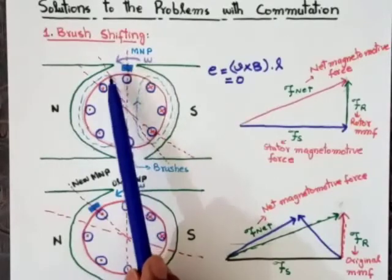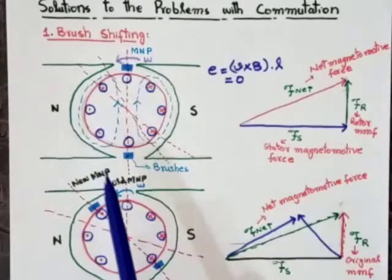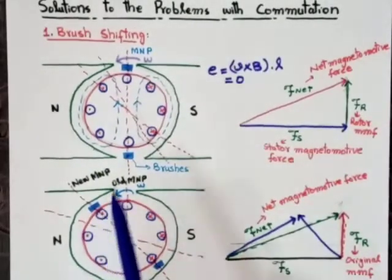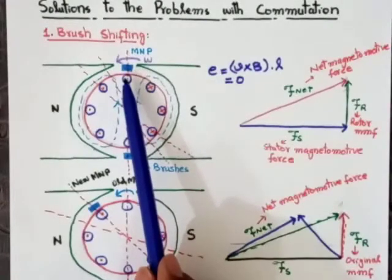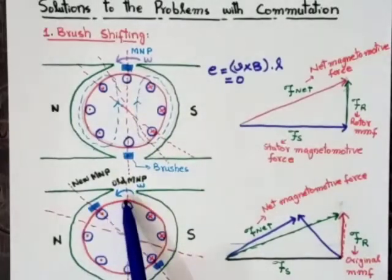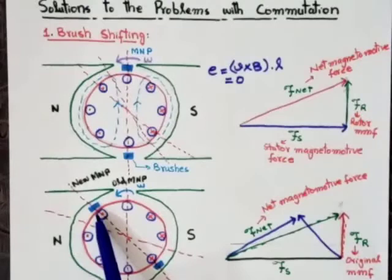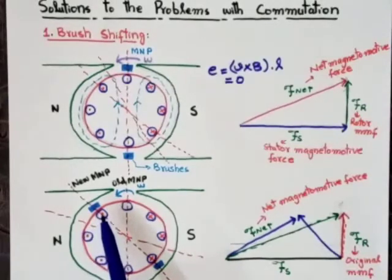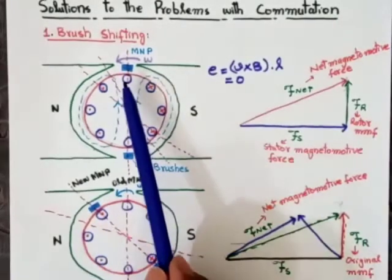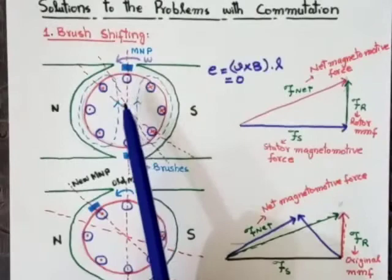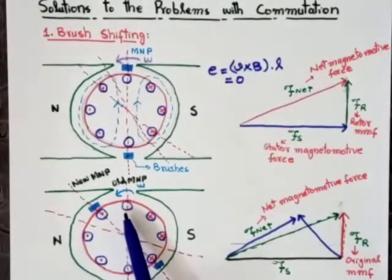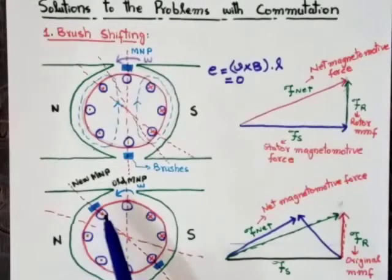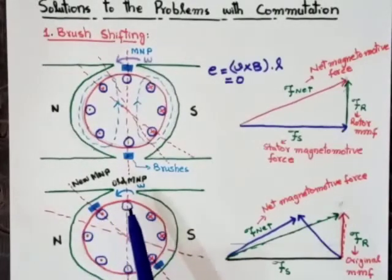When we connect the load, the magnetic neutral plane shifts in the direction of rotation. There is no mechanism inside the machine to automatically shift the brushes with the magnetic neutral plane — the brushes are fixed. There is no automatic phenomenon inside the machine to shift the brushes from one position to another. To do this, someone would have to shift the brushes manually.